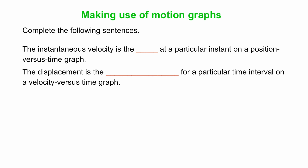Okay. However, we can often get these instantaneous values from graphs. So, what do you think is the best way to complete these sentences? Fill in the blanks. The instantaneous velocity is the slope at a particular instant on a position versus time graph. The displacement is the, note this is a much larger blank, for a particular time at a velocity versus time graph. Well, that would be the area under the curve. So let's see how these work.